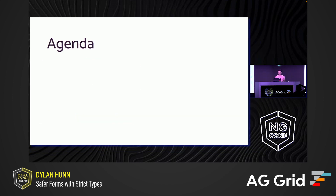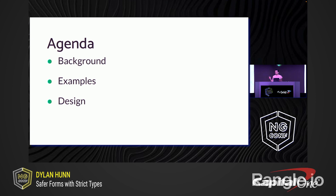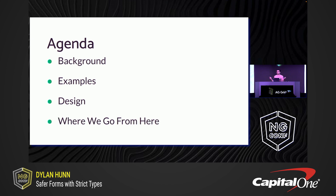I'm going to start with some motivating background for why we made this change. Then I'll give some quick examples to show you the kinds of bugs that you can catch with typed forms. Then we'll spend most of our time on a more in-depth examination of key design details, especially around value and control types, nullable and optional controls, and quite a lot more. And then we'll finish up with some discussion of what we have in store for the future.